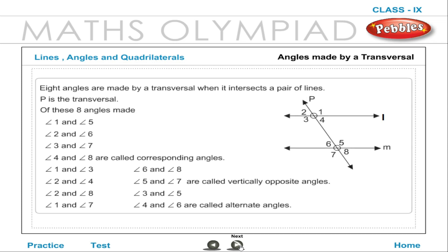Angles made by a transversal: 8 angles are made by a transversal when it intersects a pair of lines. Of these 8 angles, angle 1 and angle 5, angle 2 and angle 6, angle 3 and angle 7, angle 4 and angle 8 are called the corresponding angles.